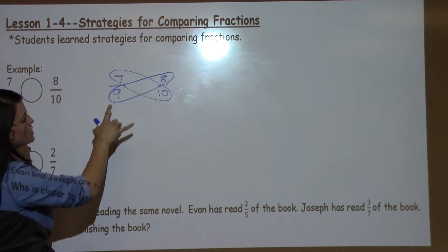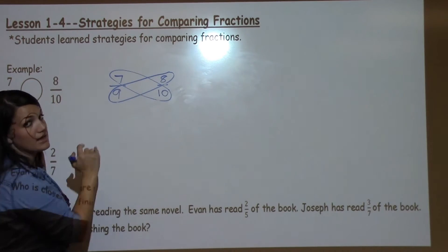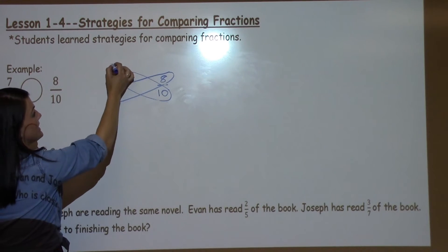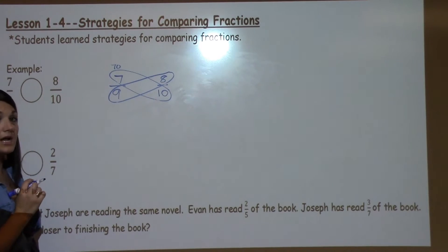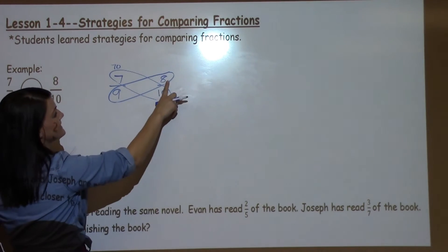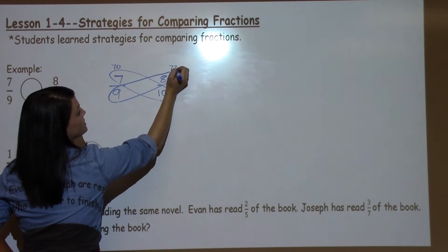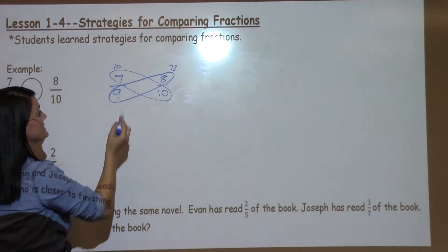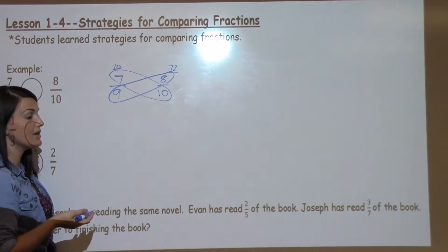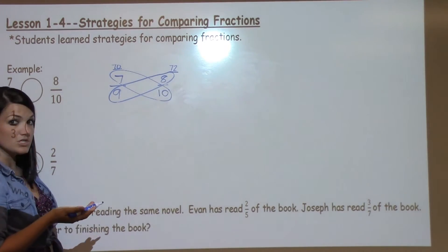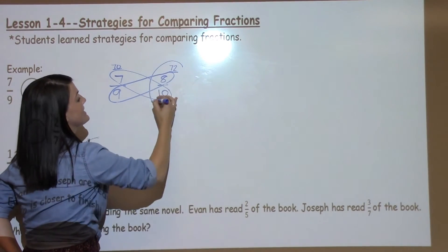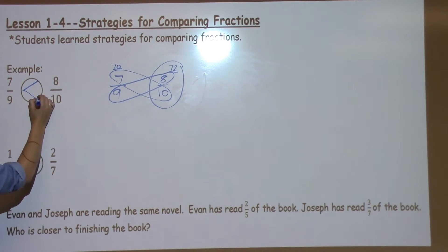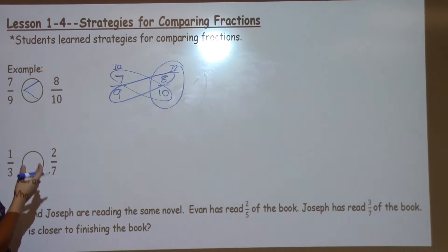What you do after that step is you multiply the two numbers that are in the wings. The first two numbers would be 7 and 10. 7 times 10 is 70, so I write it on top of that butterfly wing. 9 times 8 is 72, so I write it on top of that butterfly wing. Then all I have to do is decide which number is larger: 70 or 72. 72 is a little bit larger, so that means that 8 tenths is the larger fraction, and I'm going to put my greater than sign towards the 8 tenths.